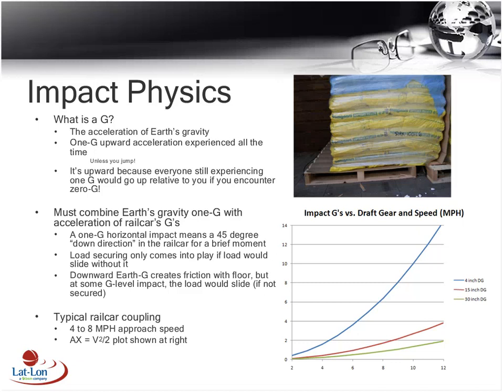When looking at draft gear, more travel distance during a car impact means fewer Gs. Standard draft gear has about 4 inches of travel or less. Cushioned draft gear uses an oil shock absorber allowing more travel — 15-inch and even 30-inch cushioned draft gears are available. The plot shows miles per hour on the bottom axis and Gs on the left. With 4-inch draft gear, Gs rise very rapidly as impact speed increases. Cushioned draft gear does exactly what it's supposed to: bring Gs down for a given impact speed.